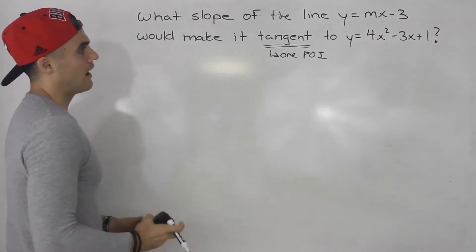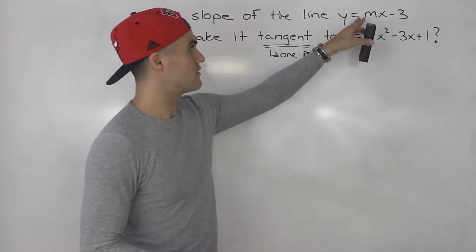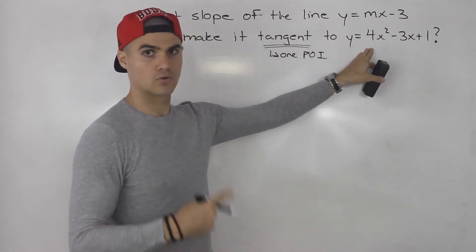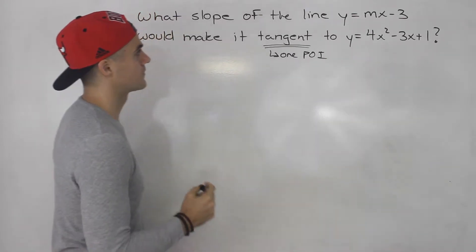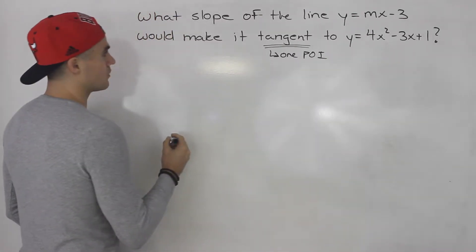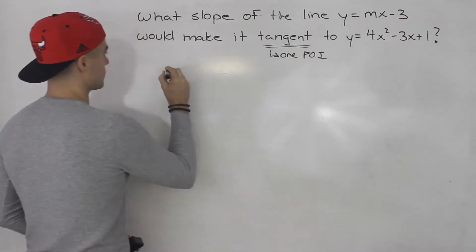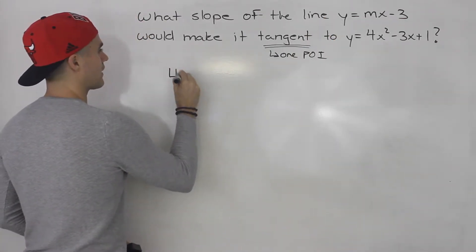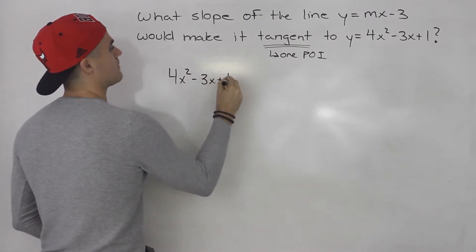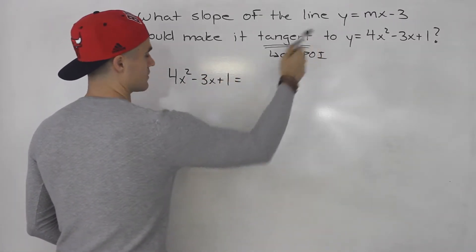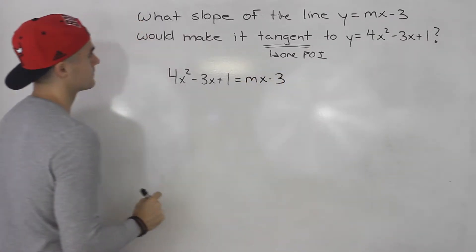So how do we do this question? How do we figure out a slope m that would make this line and this quadratic only have one point of intersection — make this line tangent to that quadratic? Well, let's follow the same process we've been following. Let's make these y values equal. So we have 4x squared minus 3x plus 1 equals the line, which is mx minus 3.